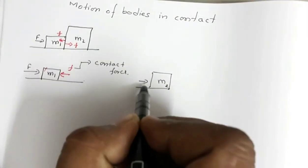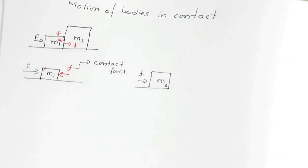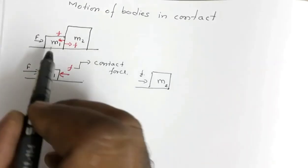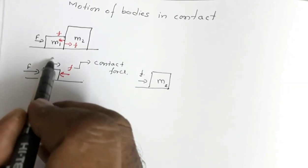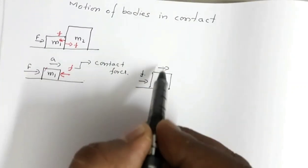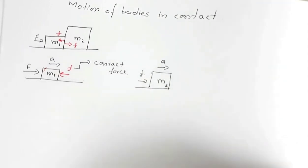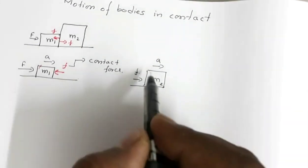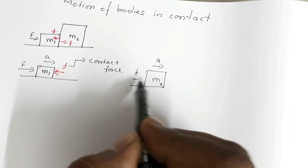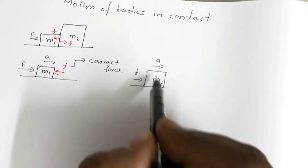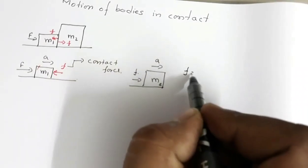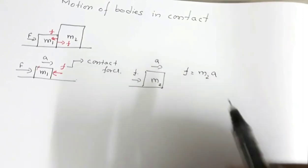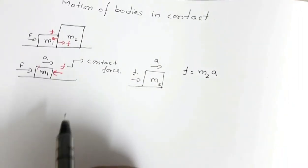This block of mass m2 is acted upon by contact force f. Now assuming that the two blocks are moving together with a common acceleration a — the acceleration of m1 is a and the acceleration of m2 is also a. For block m2, from Newton's second law, f is equal to m2 into a.